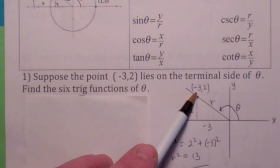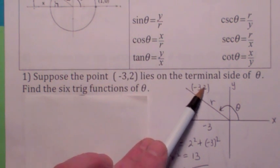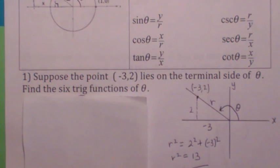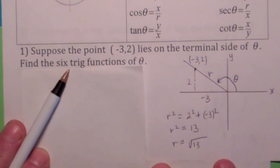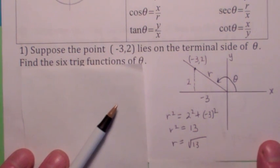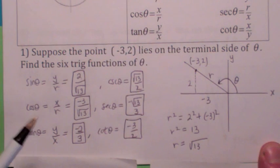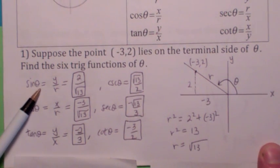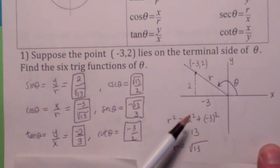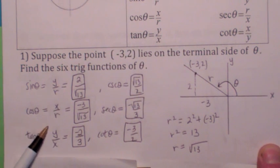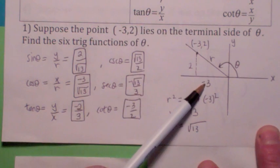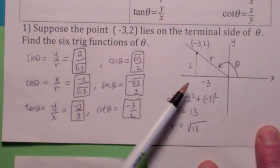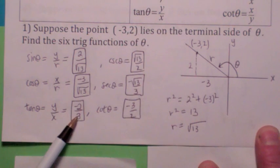Once you know the point is (−3, 2), you have to first compute r. Remember, r is the square root of x squared plus y squared; r is always positive. So you get the square root of 2 squared plus (−3) squared, which gives r equals the positive square root of 13. Now that you know x, y, and r, you can compute the six trig functions: sine of theta is y over r = 2 over √13; cosine of theta is x over r = −3 over √13; tangent is y over x = 2 over −3, or negative 2/3.